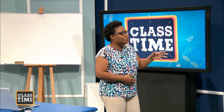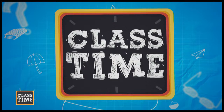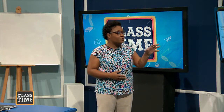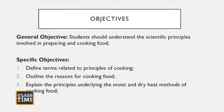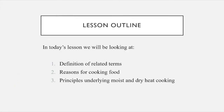On the screen you'll see our objectives. At the end of this lesson, students should understand the scientific principles involved in preparing and cooking food. We have three specific objectives: you're going to define related terms to principles of cooking, outline reasons for cooking food, and explain the principles underlying the moist and dry heat method of cooking food.